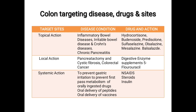Colon targeted diseases, drugs and sites. Targeted site — topical action. Disease conditions: Inflammatory bowel disease, Irritable bowel disease, Crohn's disease, Chronic pancreatitis. Drugs: Hydrocortisone, Budesonide, Prednisolone. Targeted site — local action. Disease conditions: Cystic fibrosis, Colorectal cancer. Drugs: Digestive enzyme supplements, 5-Fluorouracil. Targeted site — systemic action: to prevent gastric irritation, to prevent first pass metabolism of orally ingested drugs, oral delivery of peptides, oral delivery of vaccines. Drugs: NSAIDs, Steroids, Insulin.